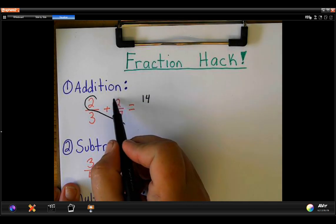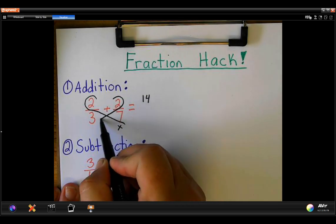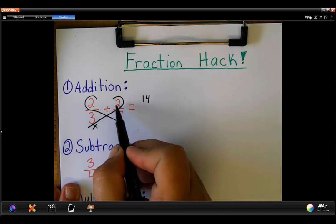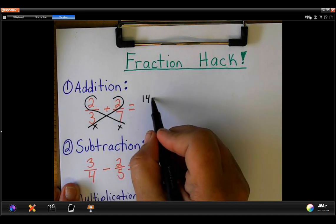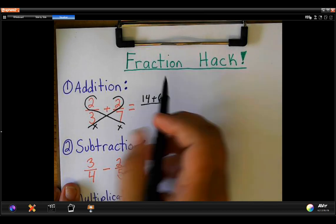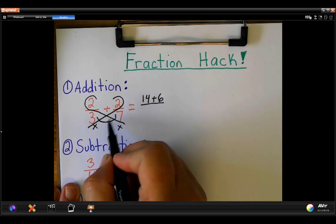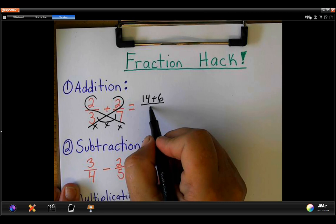Then I'm going to do the same thing here. Multiply that. 2 times 3 is 6. The bottom two, I'm going to multiply. 21.